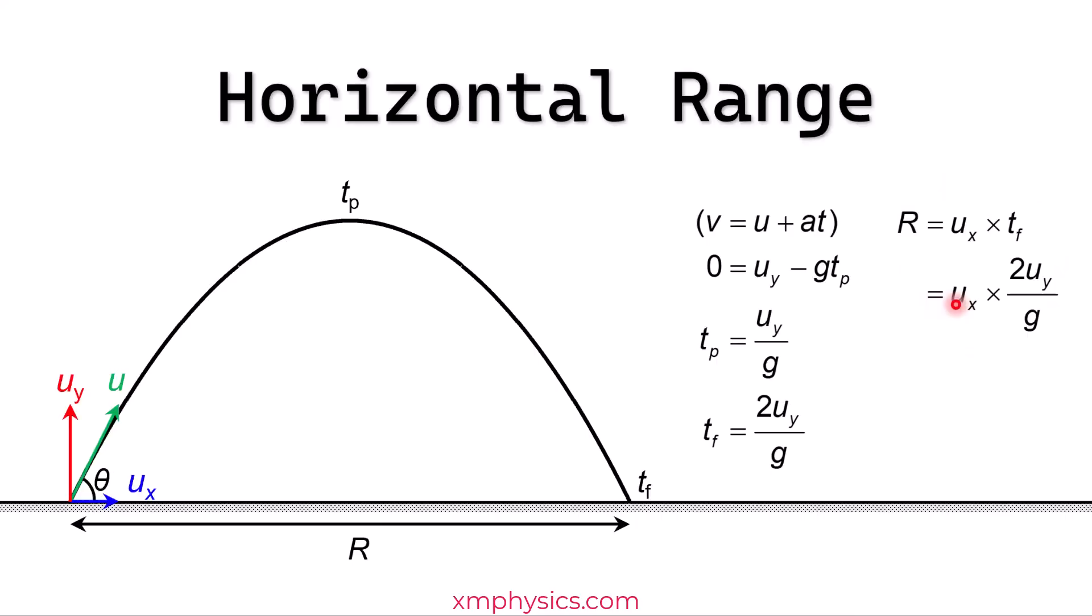First, I want you to notice that the horizontal range is decided by both the initial horizontal and the initial vertical velocity. Because the initial vertical velocity determines how long you stay in the air. Whereas the initial horizontal velocity determines how fast you move forward as you travel through the air.